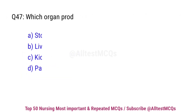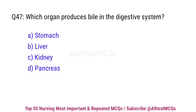Question No. 47. Which organ produces bile in the digestive system? Correct option is B. Liver.